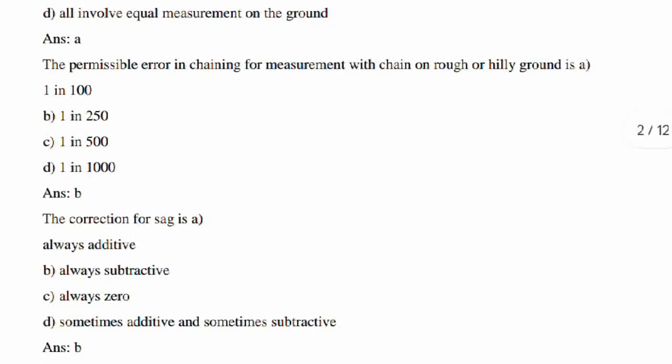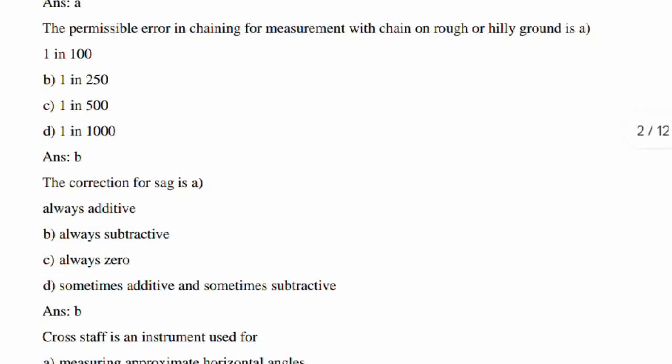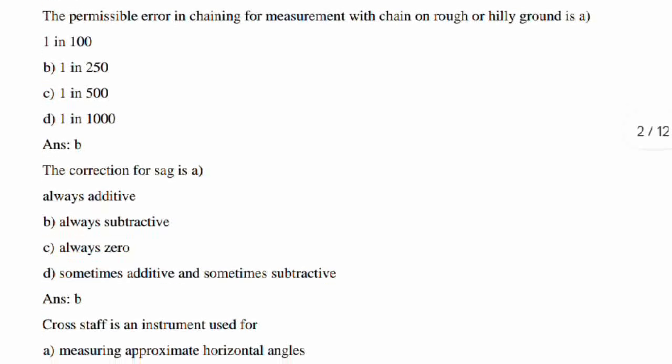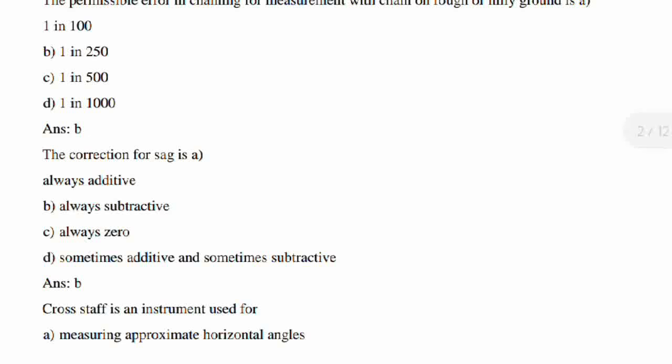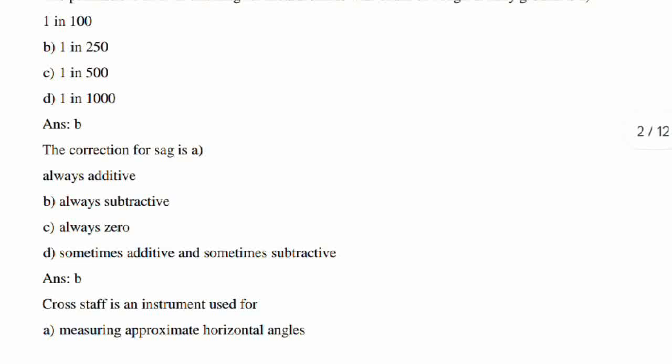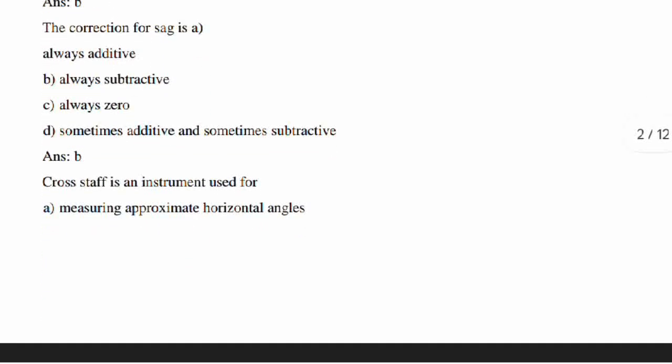The permissible error in chaining for measurement with chain on rough or hilly ground is what? 1 in 250 is the permissible error.